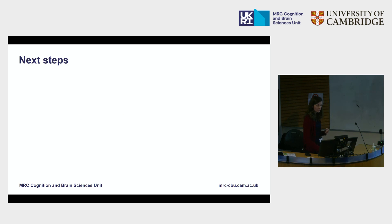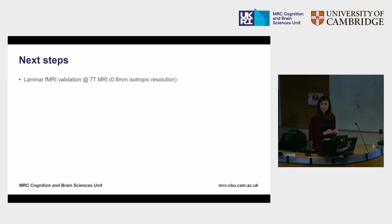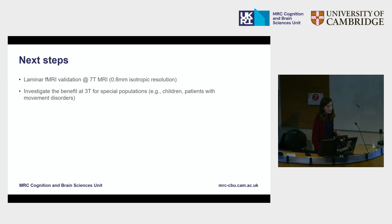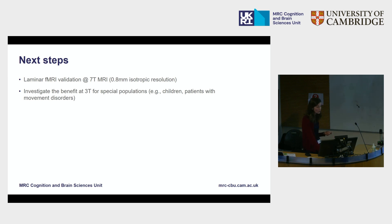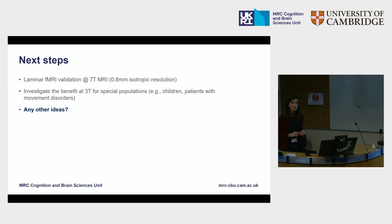So where are we going with this? We're going back to the 7T — we've got funding for a pilot study looking at laminar fMRI with motion correction. We want to see what difference it makes in data quality and in the laminar profiles if we correct for involuntary movement. We're not going to tell anybody to nod in a 7T. We're also planning to investigate the benefits of doing this at 3T with special populations who are more likely to move — such as children or patients with movement disorders. We didn't find a big benefit for cognitive neuroscience studies at 3mm, but for populations more likely to move, this might suddenly become a lot more important. Any other ideas — anybody who thinks this might be relevant for the particular studies you're interested in, please come and talk to me. The system is set up and ready to go.